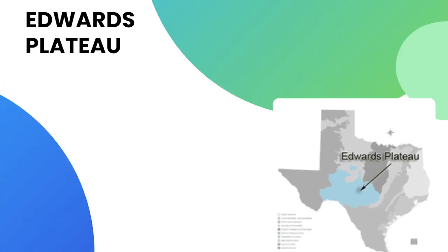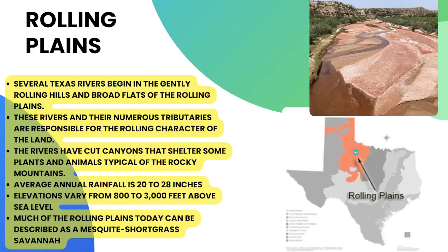The Rolling Plains region is in the northern panhandle part of Texas. Several Texas rivers begin in the gently rolling hills and broad flats here, and these rivers and their tributaries are responsible for the rolling character of the land. The rivers have cut canyons that shelter some plants and animals typical of the Rocky Mountains. Average annual rainfall is 20 to 28 inches, and elevations vary from 800 to 3,000 feet above sea level. Much of the Rolling Plains today is described as a mesquite short-grass savanna.